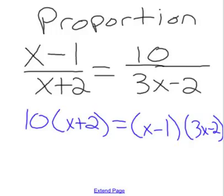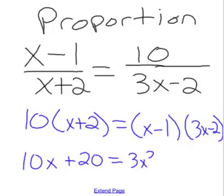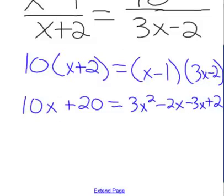Okay, then you distribute through, so 10x plus 20 equals 3x squared minus 2x minus 3x plus 2, by distributing.